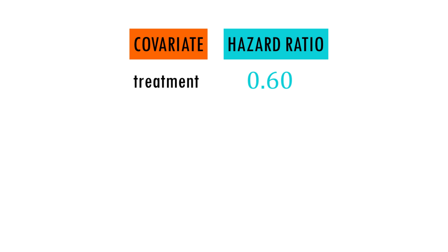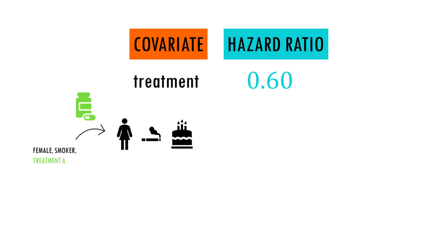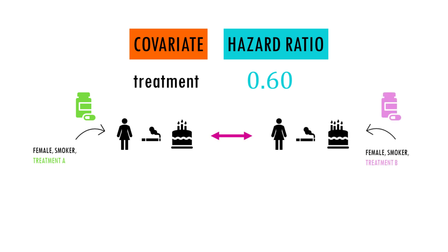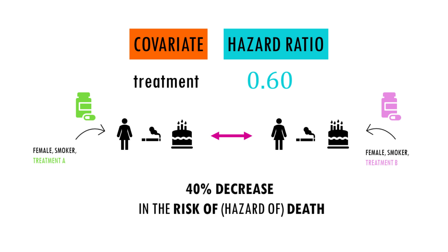For example, suppose we're studying the effect of a new medication, drug A, on the survival of patients with a specific medical condition, comparing it to a standard treatment, drug B. We obtain a hazard ratio of 0.6. This means that patients who received drug A had a 40% lower hazard of death compared to those who received drug B — in other words, the risk of death was reduced by 40% in the drug A group.